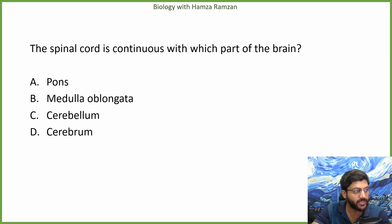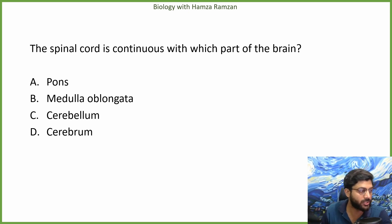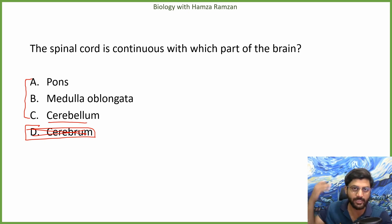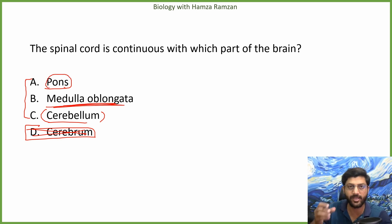The spinal cord is continuous with which part of the brain? The hindbrain has three parts — the cerebellum (called the little brain), the pons, and the medulla oblongata. It is the medulla oblongata that extends downward and forms the spinal cord.